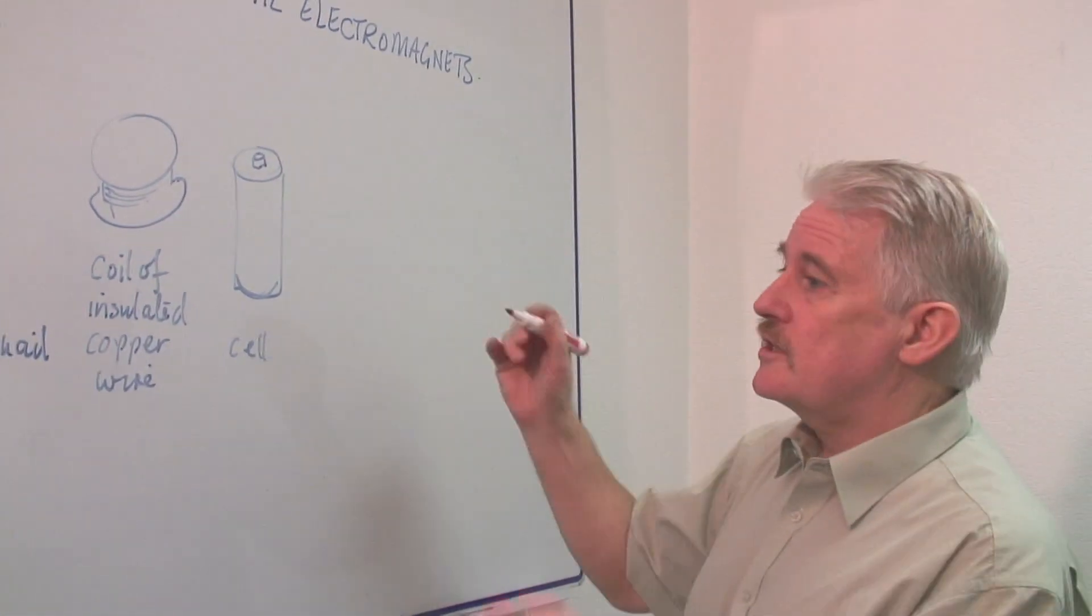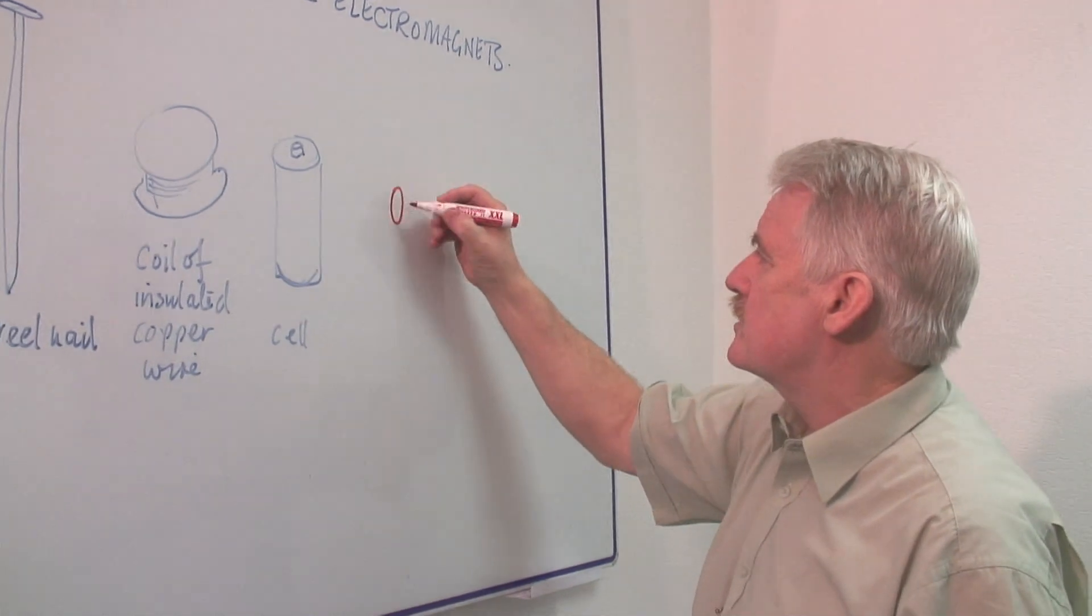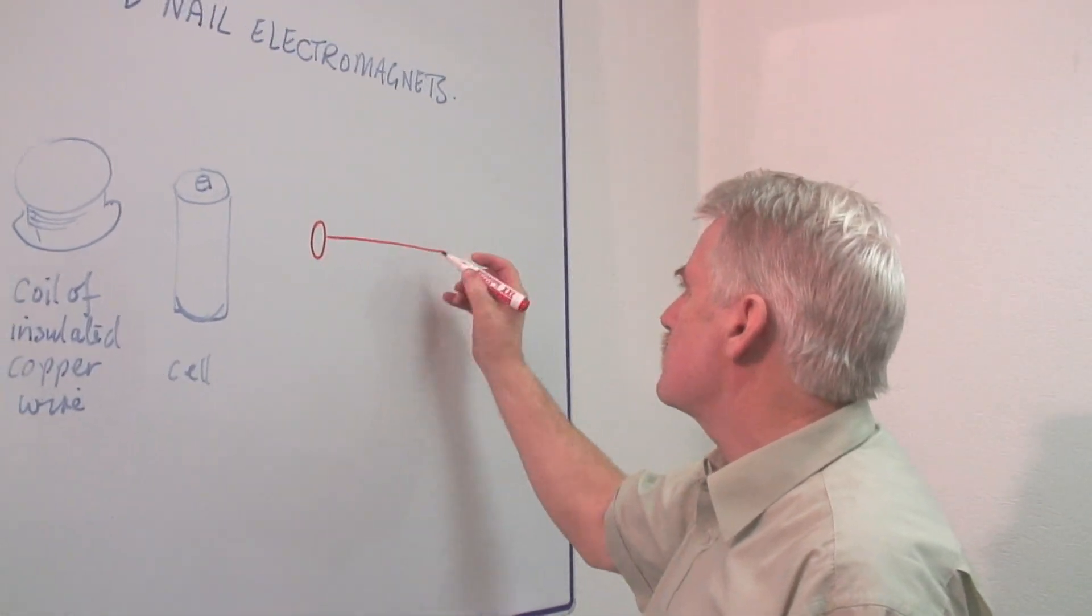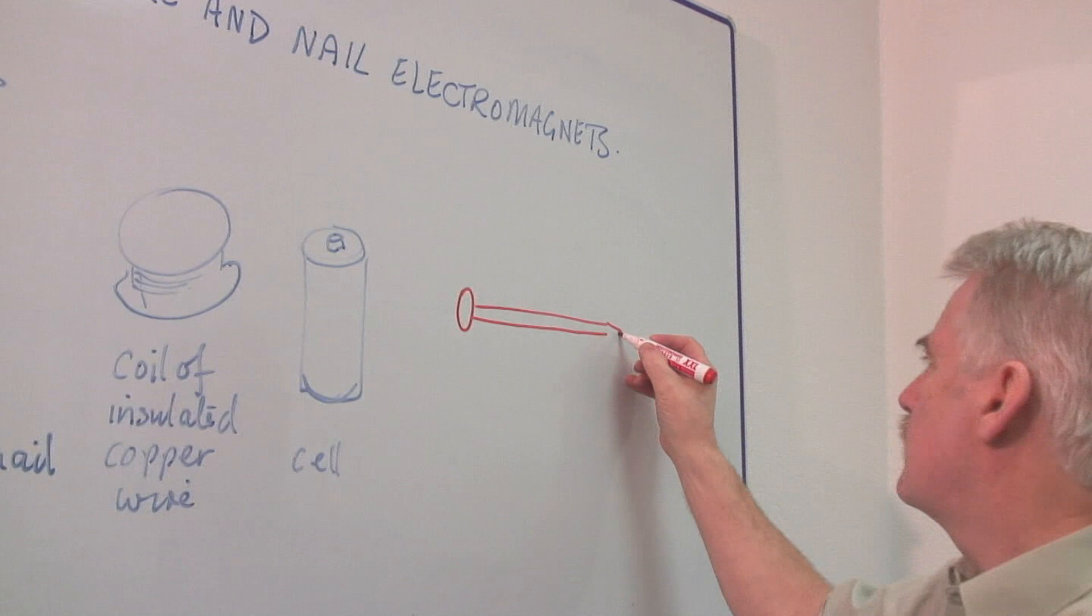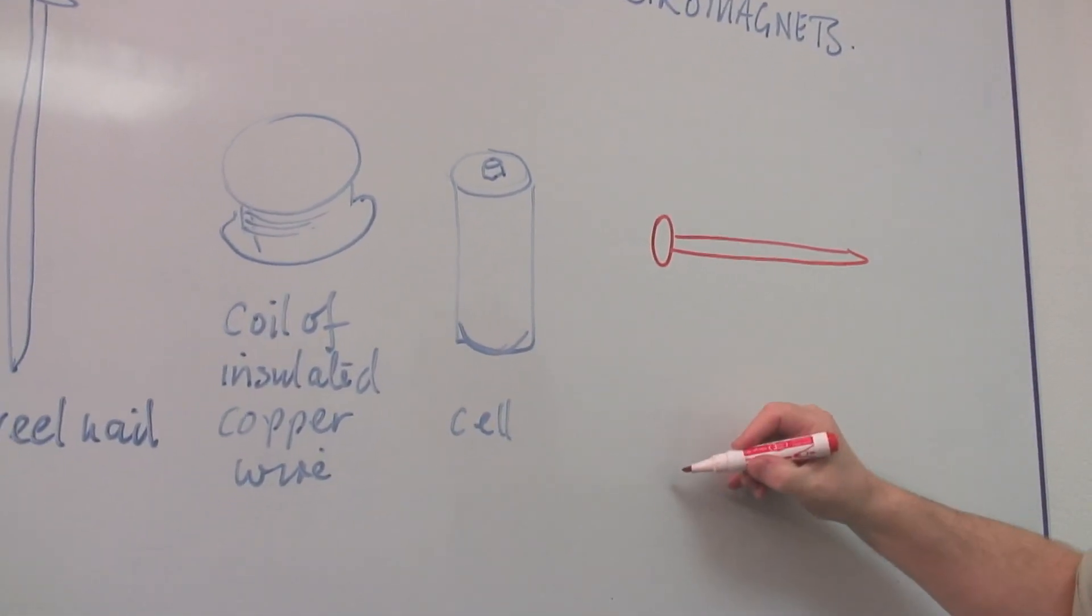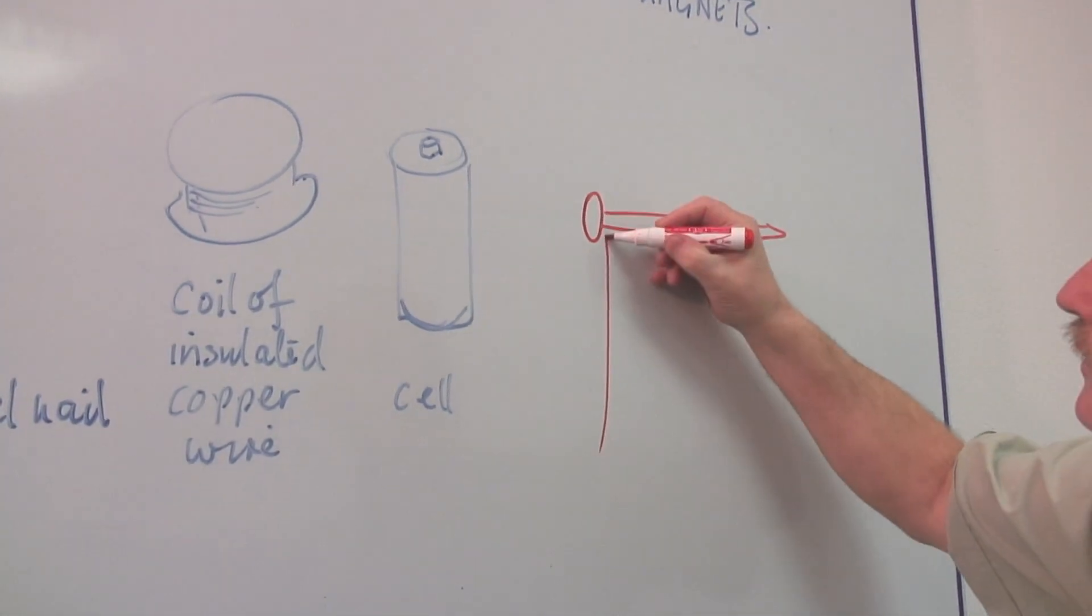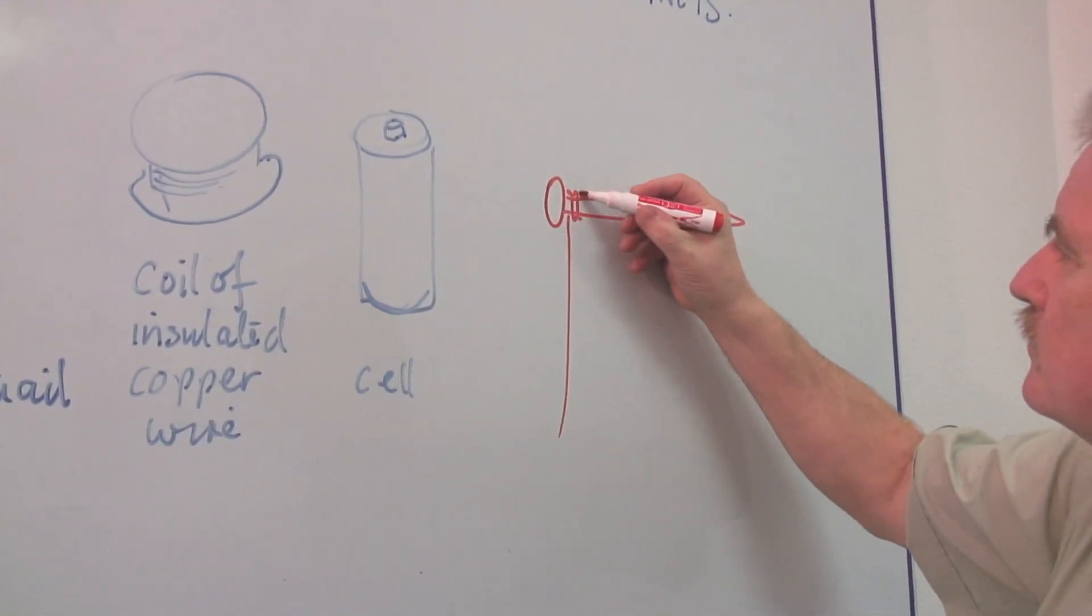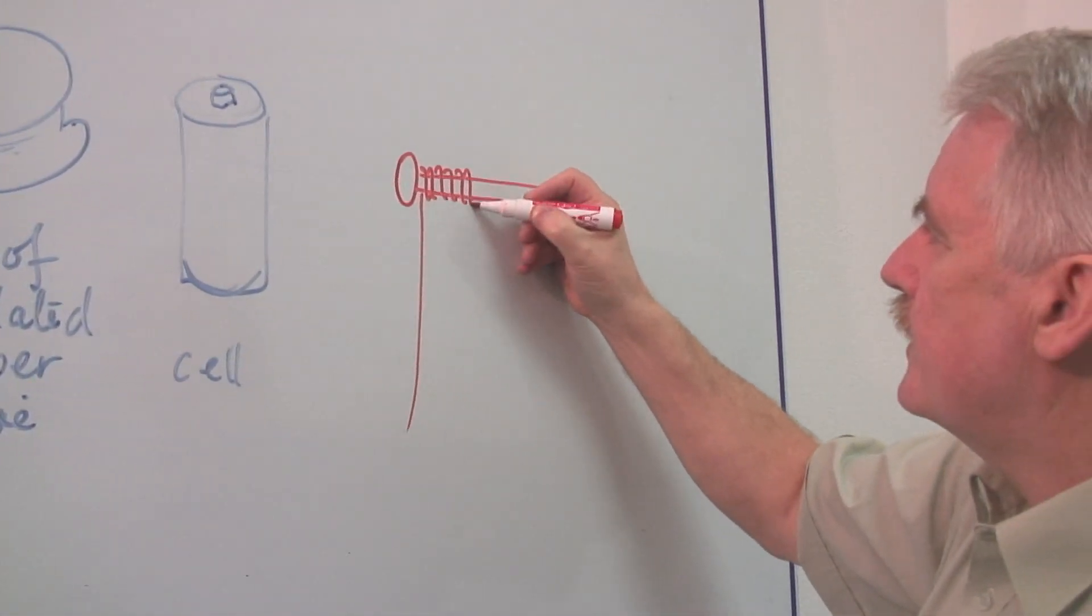The first thing to do, of course, is to take the steel nail, and it can be as big as you like or as small as you like. It doesn't matter too much. And around the nail, you wrap the copper wire. Now, starting at one end, you simply wrap it around the nail, all the way down.